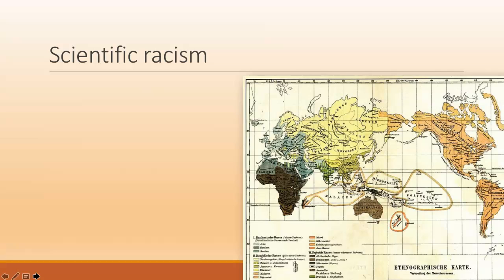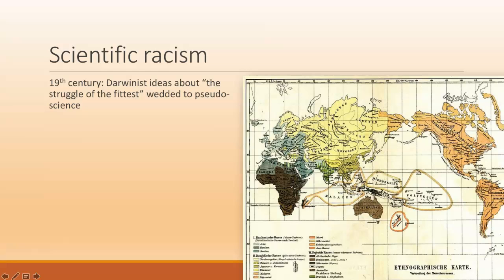The other term that we sometimes use in talking about racist ideas, particularly into the 19th century, is scientific racism. The image we're showing here is in German, but it's calling itself an ethnographic map of the world, with all the landmasses mapped out in terms of different racial categories. What was happening in the 19th century was that ideas from Charles Darwin about evolution and the survival of the fittest became wedded to pseudoscience in the interest of racist ideas. So there was this idea of supposedly being able to divide Homo sapiens up into racial categories, which were then hierarchically ranked.